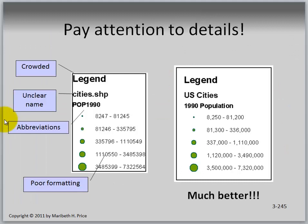Paying attention to design details: the legend on the left is crowded with unclear names — for example, 'cities dot shape' and unclear abbreviations like 'pop 1990' instead of '1990 population,' plus poor number formatting. On the right we have nicely formatted numbers, a nice box around the legend, no word 'legend,' and items could be made even bigger for more emphasis. Use this as a don't vs. do example.